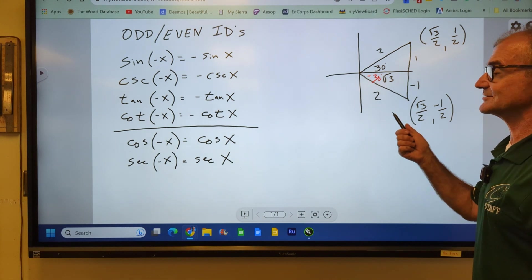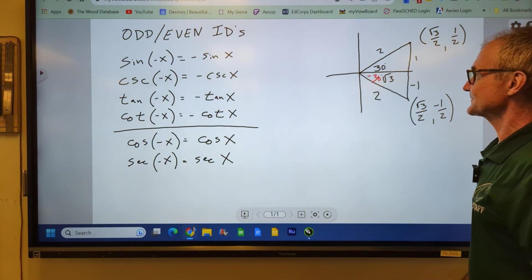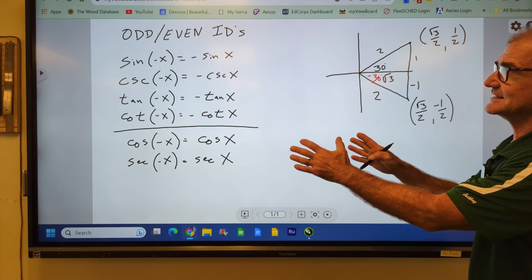I'm going to assume you know the unit circle pretty well. You know your exact values, and let's take a look at these six odd even identities.